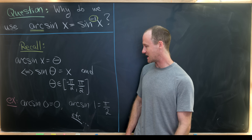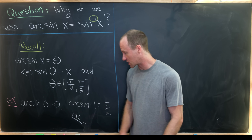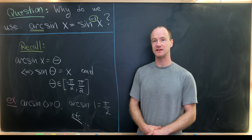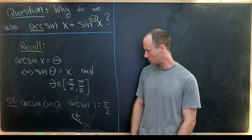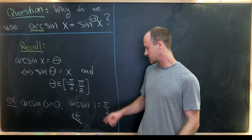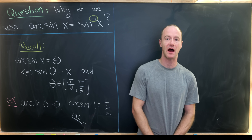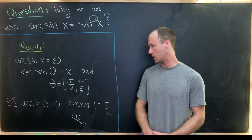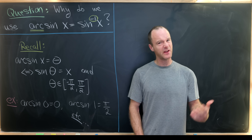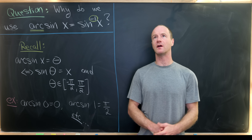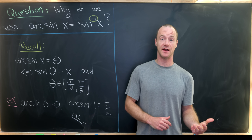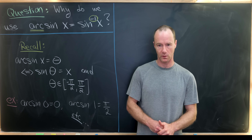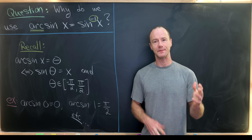As some examples: the arcsine of 0 is 0, because sine of 0 is 0. The arcsine of 1 is pi over 2, because sine of pi over 2 is 1. And the arcsine of the square root of 2 over 2 is pi over 4.